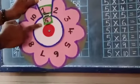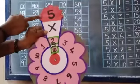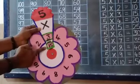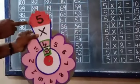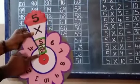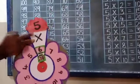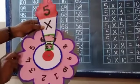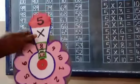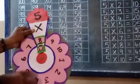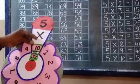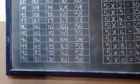5 ones are 5, 5 twos are 10, 5 threes are 15, 5 fours are 20, 5 fives are 25, 5 sixes are 30, 5 sevens are 35, 5 eights are 40, 5 nines are 45, 5 tens are 50.